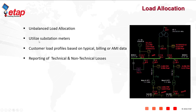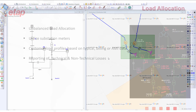ETAP also includes an unbalanced load allocation calculation engine. This calculation allows you to utilize substation meters and combine them with customer load profiles. These customer load profiles are based on either typical profiles such as residential and commercial, billing data, or AMI data coming from your smart meter. By allocating the substation meter data down to individual customers, you can also get a report of technical as well as non-technical losses in your system.